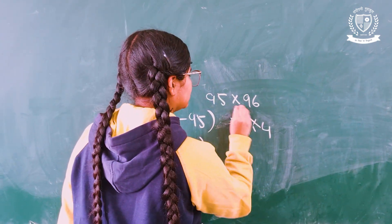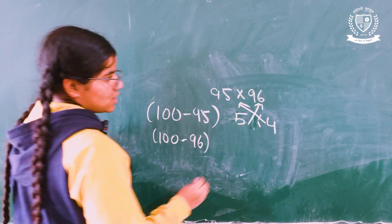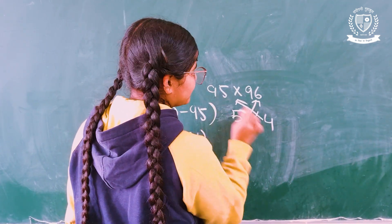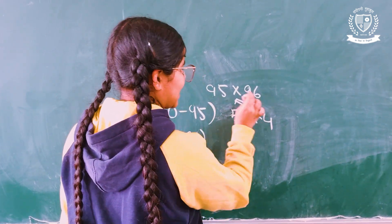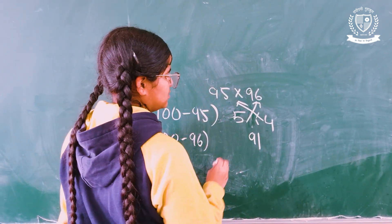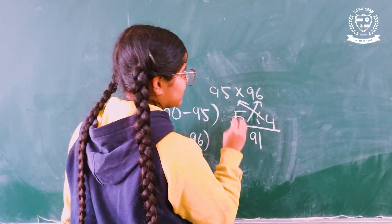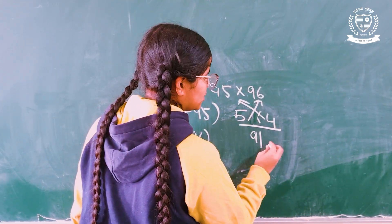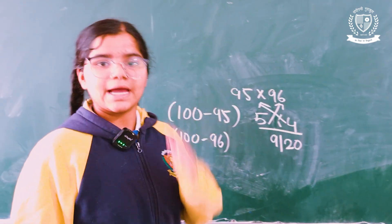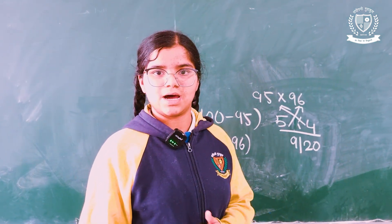Now the next step is to cross subtract them. 95 minus 4 and 96 minus 4 will give us 91. Next step is to multiply 5 and 4, which will give us 20. 9,120 is the answer.